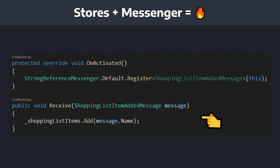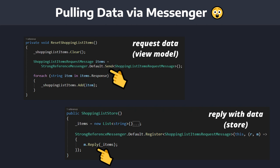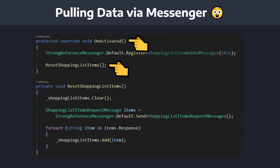It's somewhat like a more fluent abstraction on top of .NET events. There's also a cool feature where subscribers can request data from the data source, which could be useful for state management. Imagine you instantiate a view model — that view model could request data from the store via the Messenger.